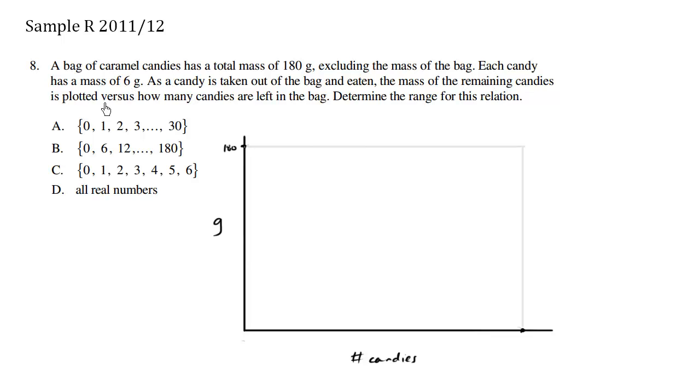Each candy has a mass of 6 grams. As a candy is taken out of the bag and eaten, the mass of the remaining candies is plotted versus how many candies are left in the bag. So we have candies and we have the grams. Determine the range for this relation.